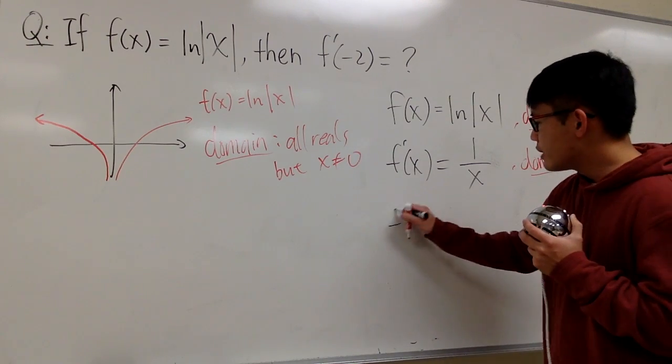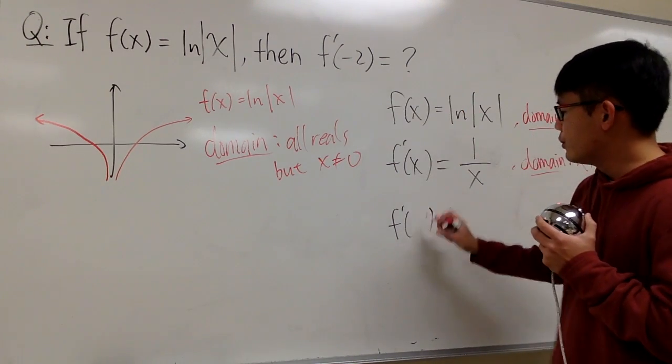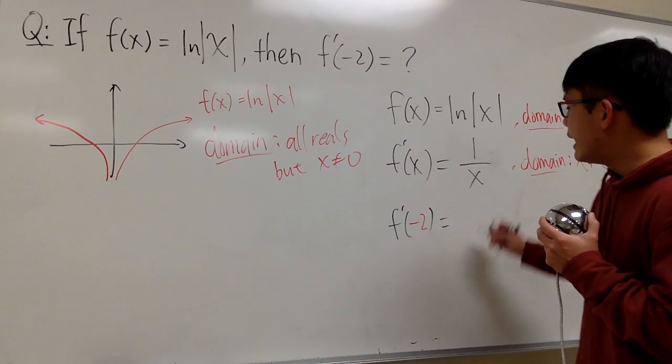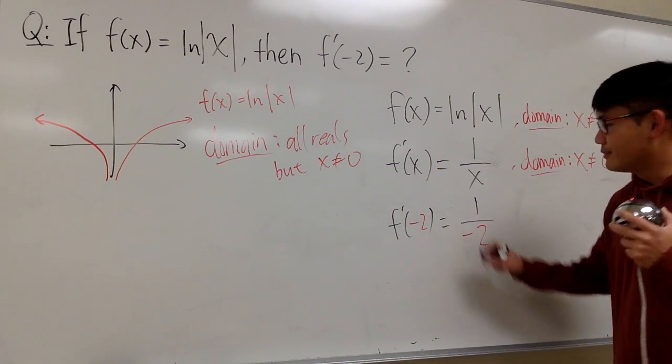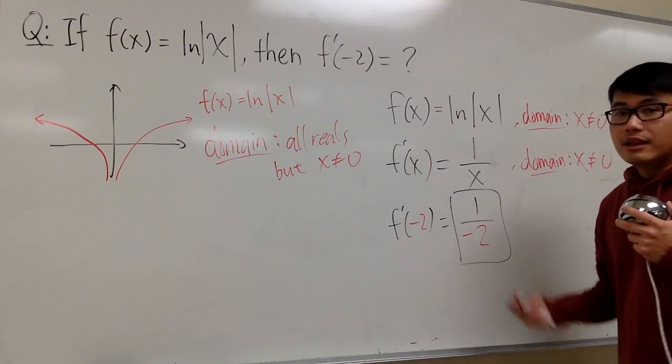So, for this question, f' of negative 2. This is doable, and you end up with 1 over negative 2, negative 1 half. This is the answer for it. Does this make sense?